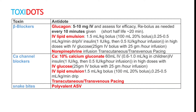The first toxin is beta blocker. You have to give glucagon as the antidote — 5 to 10 mg IV — and assess the efficiency of the drug given. Repeat bolus can be given every 10 minutes. Next is IV lipid emulsion: 1.5 ml per kg bolus in 100 ml dextrose is the recommended dose. Norepinephrine or noradrenaline infusion can be given if the patient does not respond. Transcutaneous or transvenous pacing can also be done.